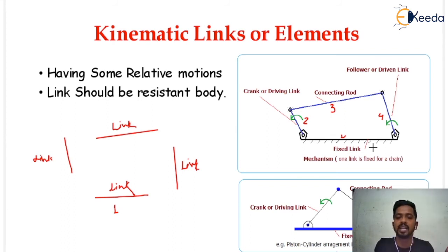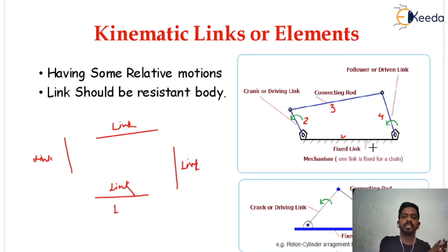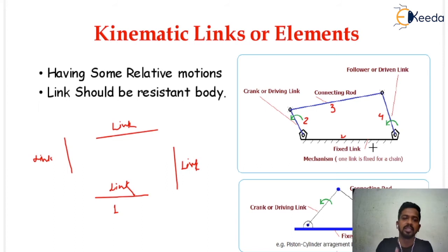That is the first basic criteria for kinematic links — they must have some relative motion. Consider another example: in a machine there are a number of components, and some parts of the machine are in relative motion with respect to other parts. That is why we can say they are kinematic links, because they have some relative motion.